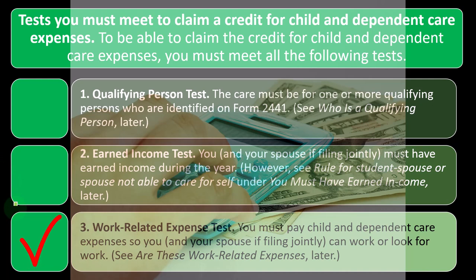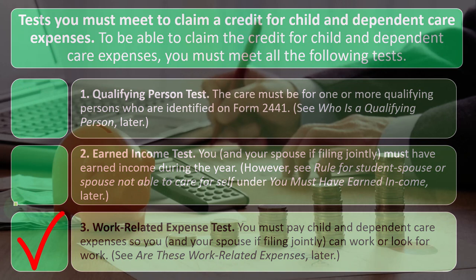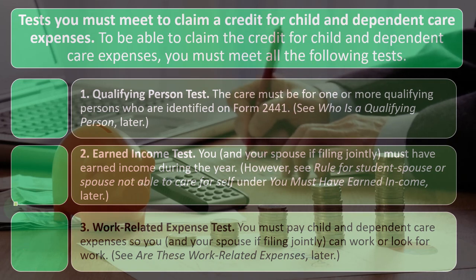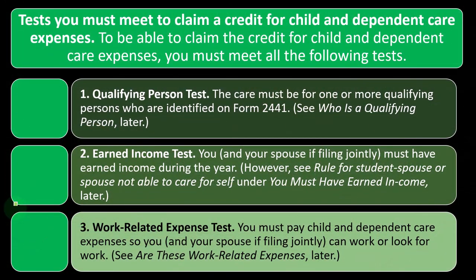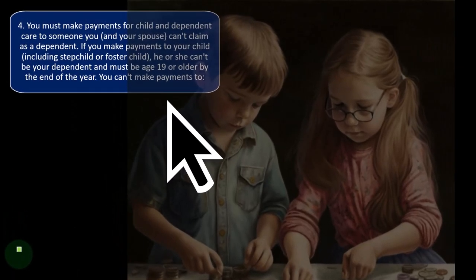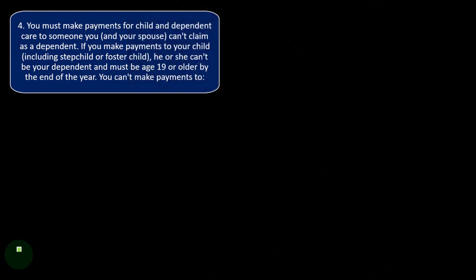The third test is the work-related expense test. You must pay child and dependent care expenses so that you and your spouse, if filing jointly, can work or look for work. The fourth test: you must make payments for child and dependent care to someone you and your spouse can't claim as a dependent. If you make payments to your child — including a stepchild or foster child — he or she can't be your dependent and must be age 19 or older by the end of the year.